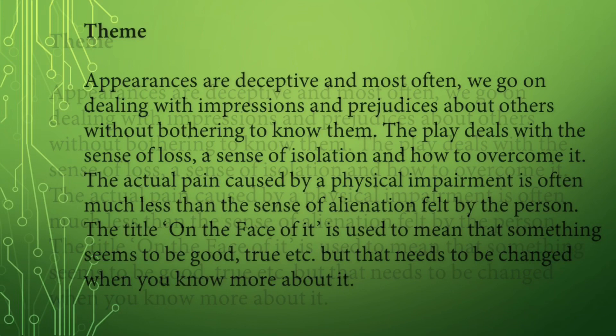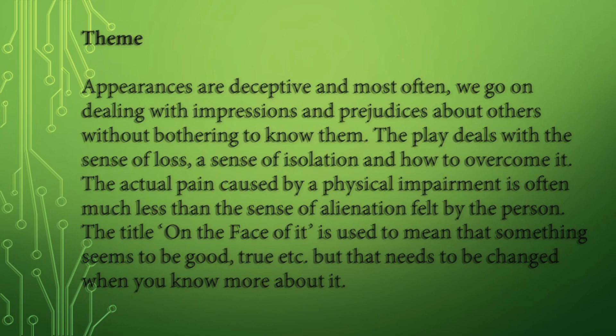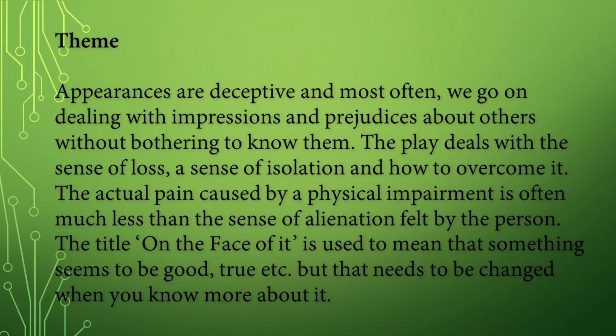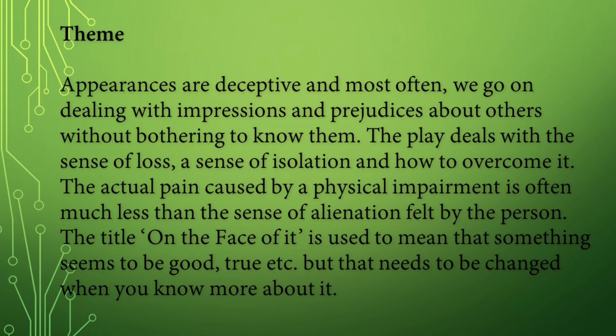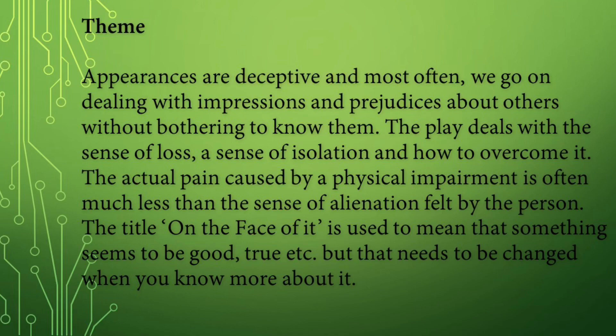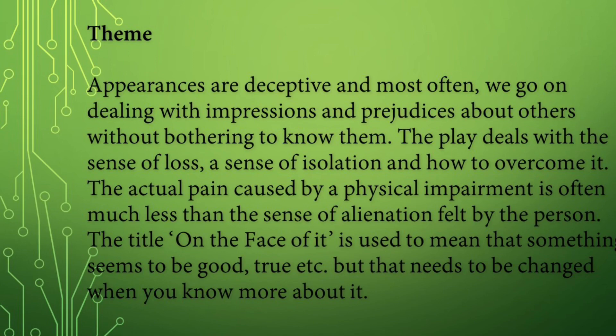The theme of the chapter: Appearances are deceptive and most often we go on dealing with impressions and prejudices about others without bothering to know them. The play deals with a sense of loss, a sense of isolation, and how to overcome it. The actual pain caused by a physical impairment is often much less than the sense of alienation felt by the person. The title 'On the Face of It' is used to mean that something seems to be good or true, but that needs to be changed when you know more about it.